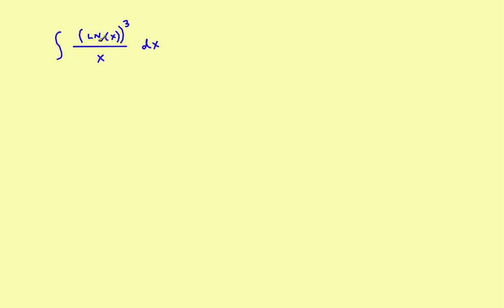The first one is the integral of the natural log of x quantity cubed divided by x. This is going to be a u substitution problem, and the first thing you've got to decide is what to pick for u. Let's look at a couple of choices — and actually let's make the wrong decision first. Suppose you decided to let u equal x. In u substitution, the derivative of u should get rid of the other thing. The derivative of x is not the natural log of x, so that would be a poor choice.